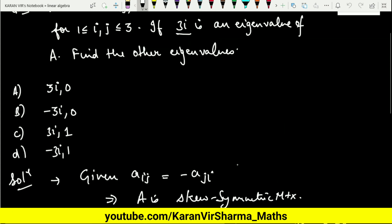So you are just left with the case which is zero. It means zero must be the eigenvalue and minus 3i must be the eigenvalue. So this implies the second option is correct.